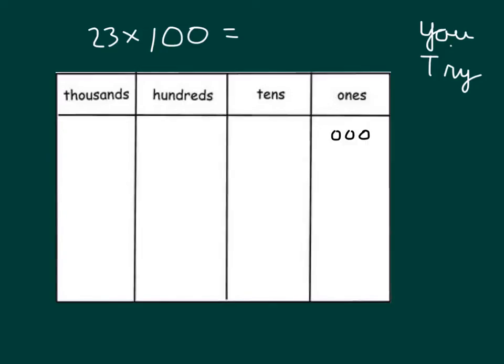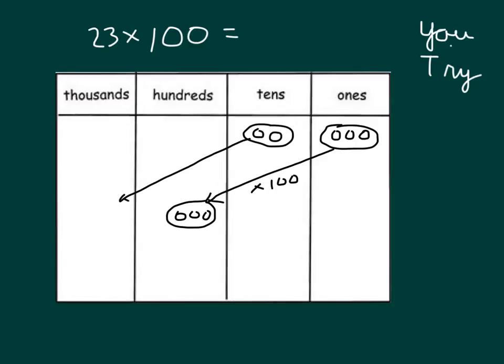So there is our group of 3 ones. And then we also have our group of 2 tens. When we're multiplying by 100, 3 ones times 100 wouldn't be worth a 10, it'd actually be worth 3 hundreds. So they get moved 2 places on over to the left. If that's the case with the ones, then 2 tens times 100 would get shifted all the way over to the thousands place.